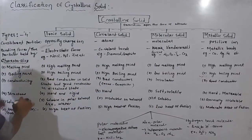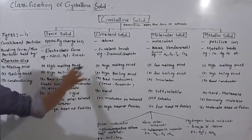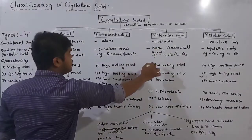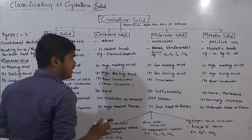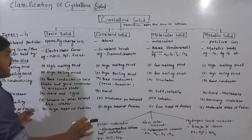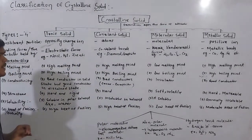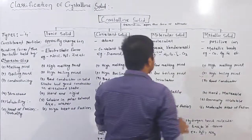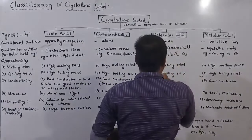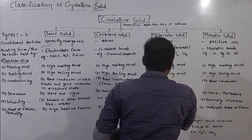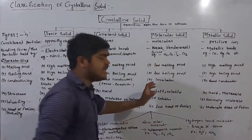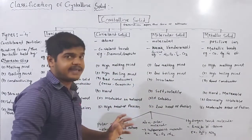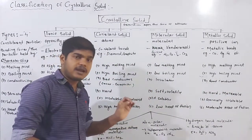Let's look at the boiling point. Similar to the melting point pattern, the molecular solid has a low boiling point and all others — ionic, covalent, and metallic solids — have high boiling points.